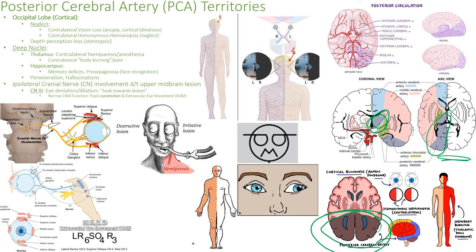If our occipital lobe does not work, we cannot see well — because that's our visual cortex. All those nerve impulses from the optic nerve will arrive at the occipital lobe, and because that's failed, you're going to see contralateral vision loss. It's called homonymous hemianopsia — homonymous meaning the same side, hemi meaning half, and -opsia meaning vision. Half of your vision is lost on the same side in both eyes. Homonymous hemianopsia is seen with both MCA and PCA strokes.